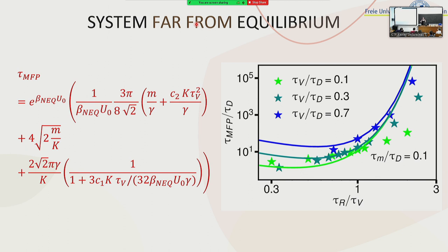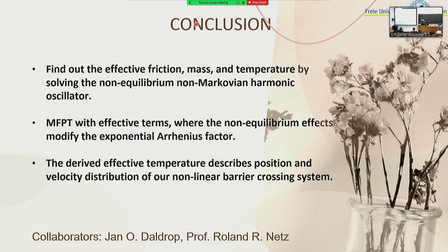In conclusion, we found effective parameters — friction, mass, and temperature — by solving the non-equilibrium, non-Markovian harmonic oscillator. We found a formula for the mean first passage time where non-equilibrium strongly affects the time by changing the exponential Arrhenius part. We also observe that the effective temperature describes the position and velocity distributions for a barrier-crossing system even far from equilibrium. Thank you.